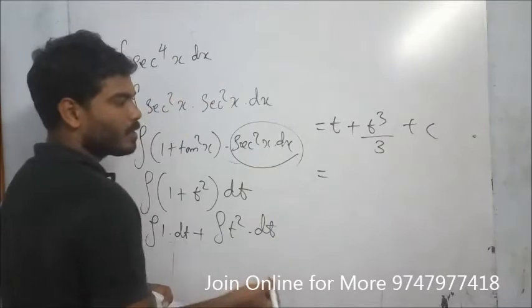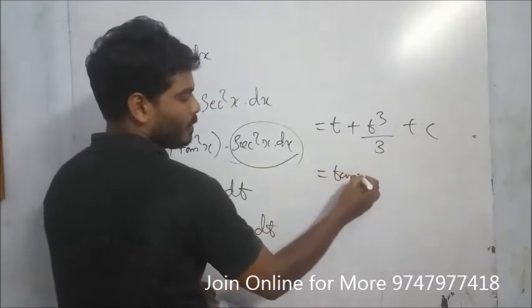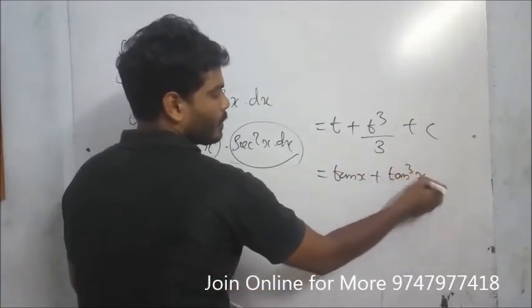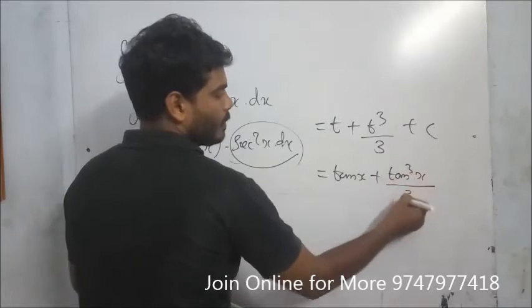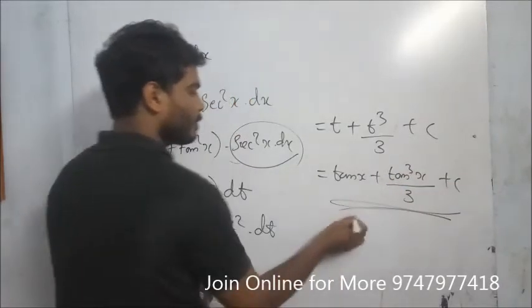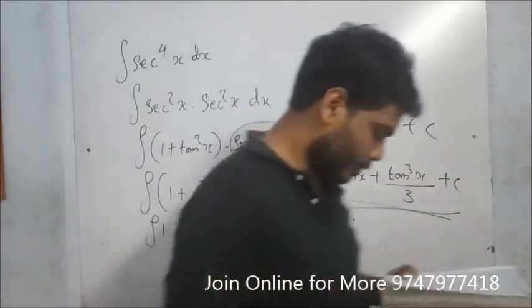Now substituting back, t equals tan x. So the answer is tan x plus tan³x divided by 3 plus c.